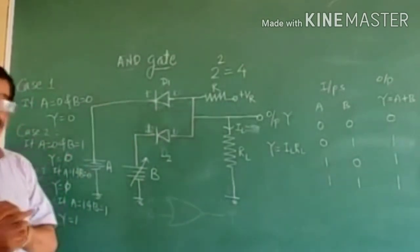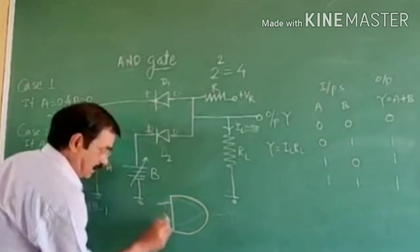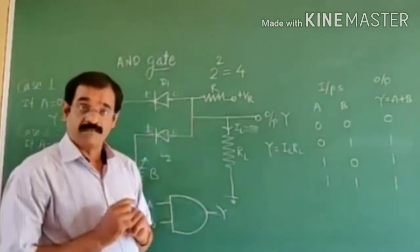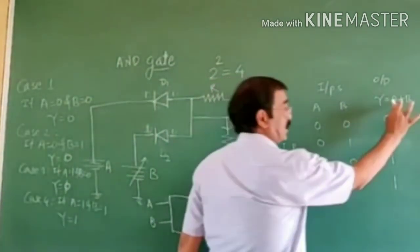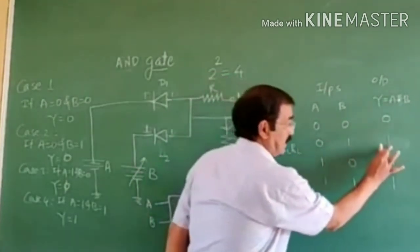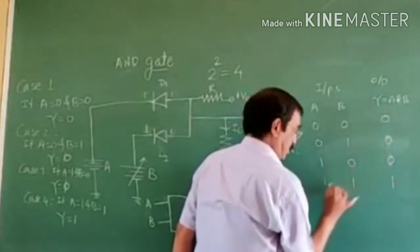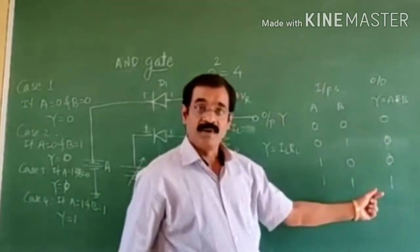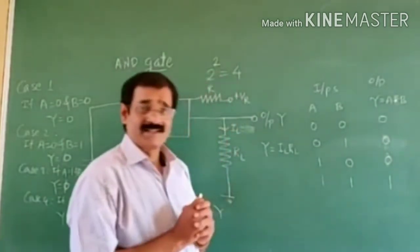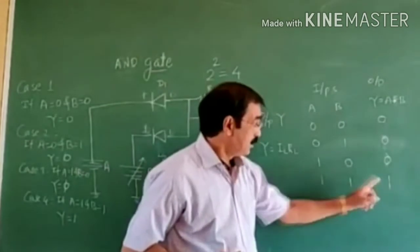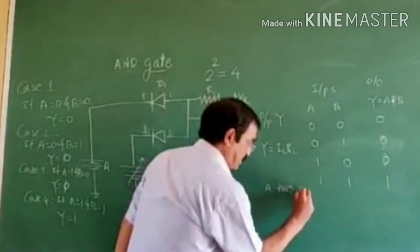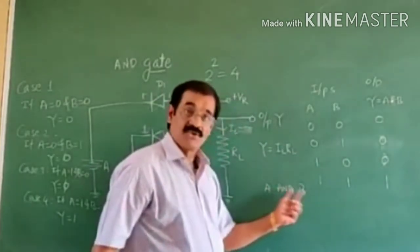The logic symbol of the AND gate is similar to a capital D shape. Here are the two inputs A and B, and output is Y. The Boolean equation of the AND gate is A dot B or A into B. So: 0 into 0 is equal to 0, 0 into 1 is equal to 0, 1 into 0 is equal to 0, and 1 into 1 is equal to 1. The output is high only when both inputs are 1. It is called the AND gate because the output is high when A and B both inputs are high — the word 'and' comes between inputs A and B.